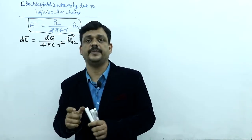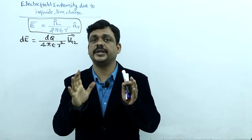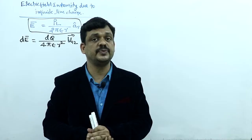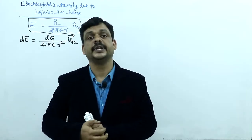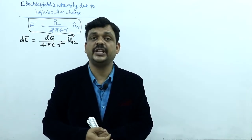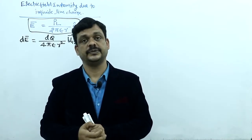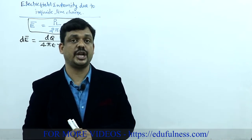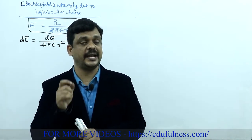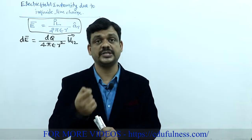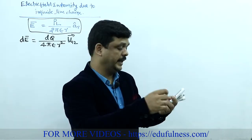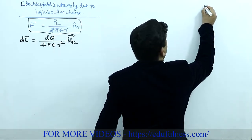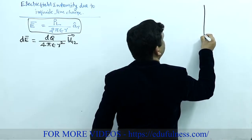To derive this equation, I am taking one infinite line charge where the charge is distributed on the line of infinite length. The line charge density ρL represents total charge per unit length.